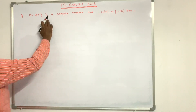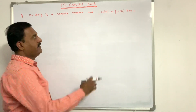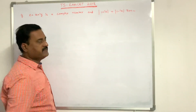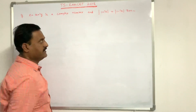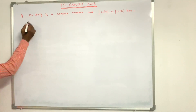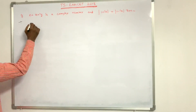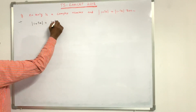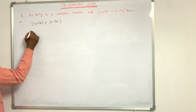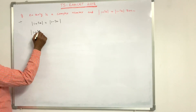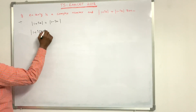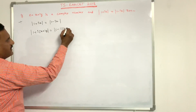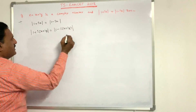If z equals x plus iy is a complex number and |1 + iz| = |1 - iz|, then we need to find the result. Here z = x + iy and the given relation is |1 + iz| = |1 - iz|. That is, the modulus of (1 + i)(x + iy) equals the modulus of (1 - i)(x + iy).